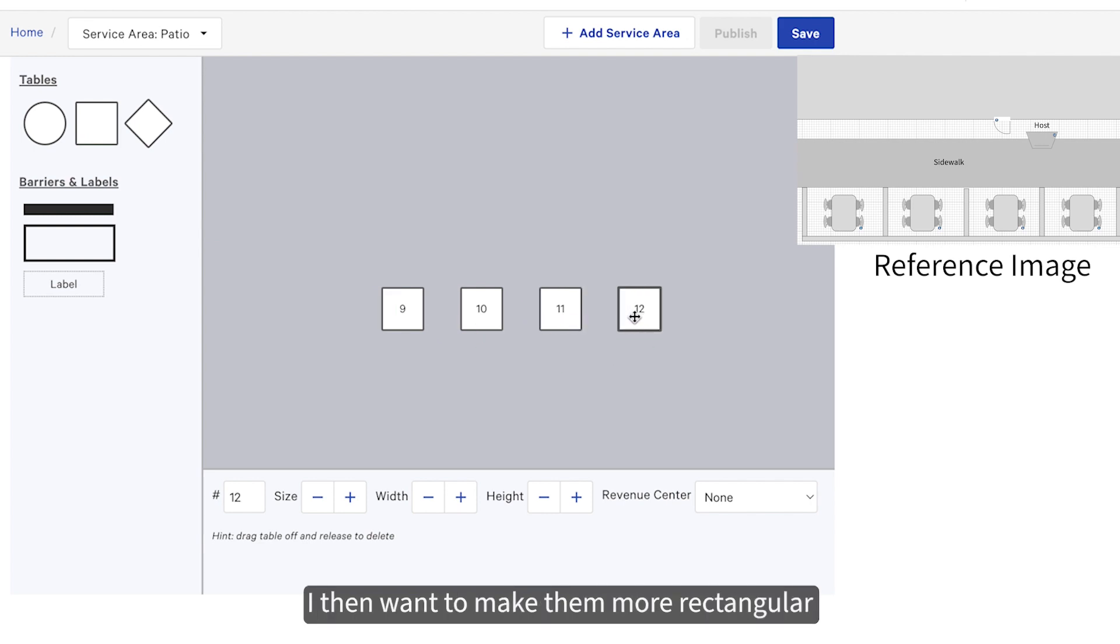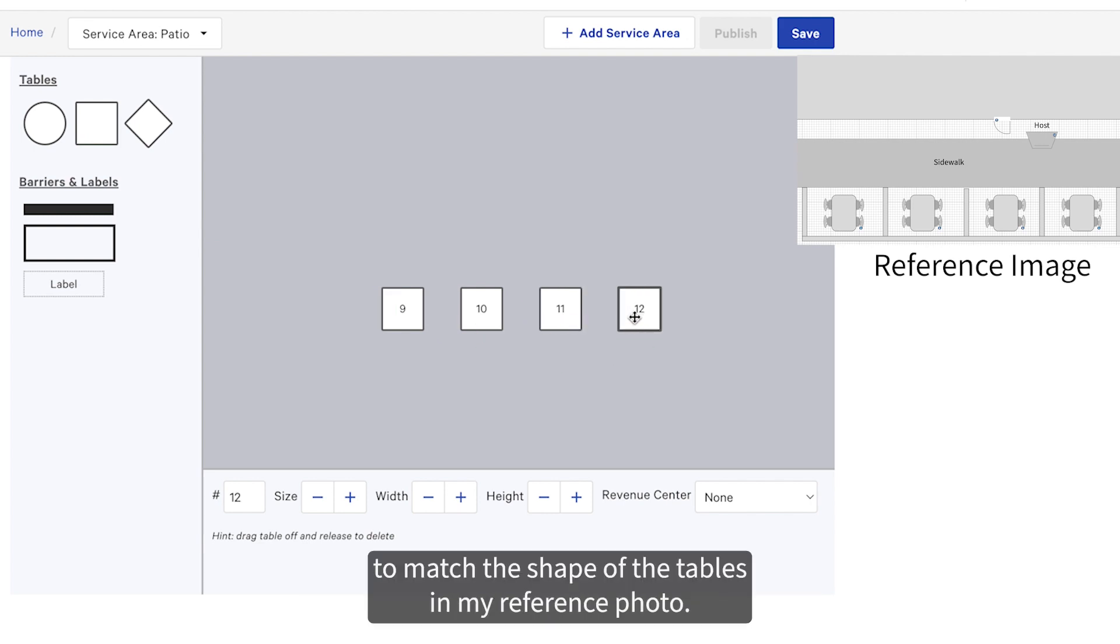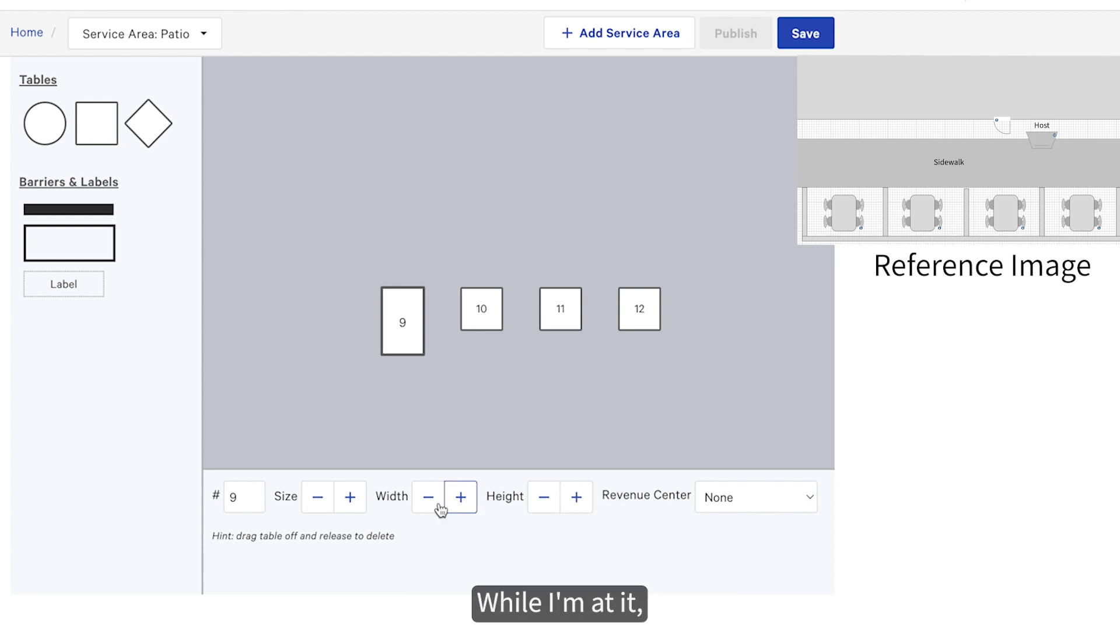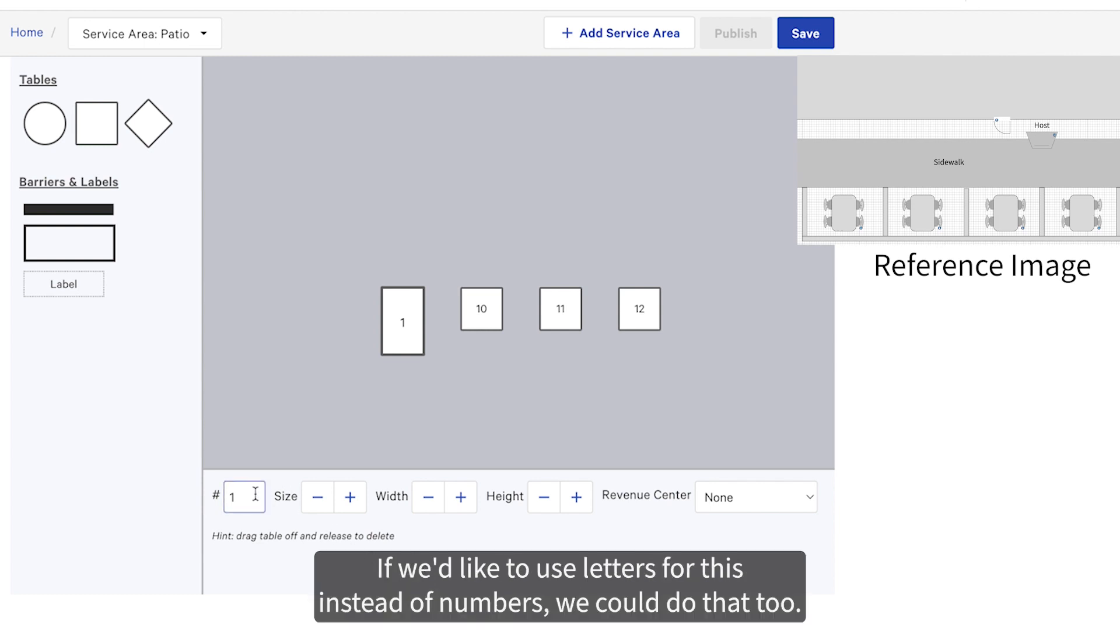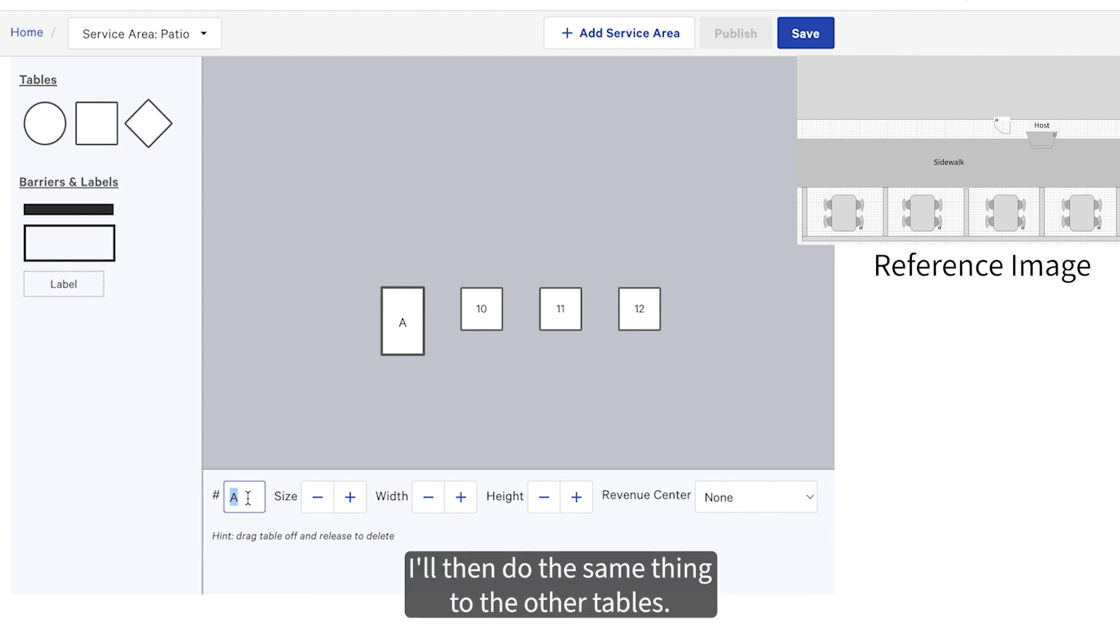I then want to make them more rectangular to match the shape of the tables in my reference photo. To do this, I'll select the table and adjust the height. While I'm at it, I'm going to change the table number so it's table number one. If we'd like to use letters for this instead of numbers, we could do that too. I'll then do the same thing to the other tables, so tables one through four will be the same shape and in the correct order.